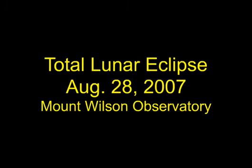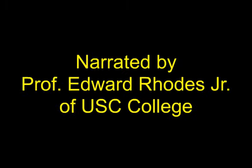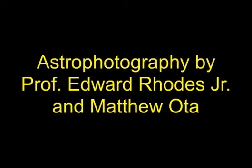Our lunar light show consists of two parts. We begin with a simulation of the first half of the total lunar eclipse of August 28, 2007, followed by a set of nearly 200 digital images of the Moon taken during the eclipse from the Mount Wilson Observatory with a 16-inch telescope and digital camera.